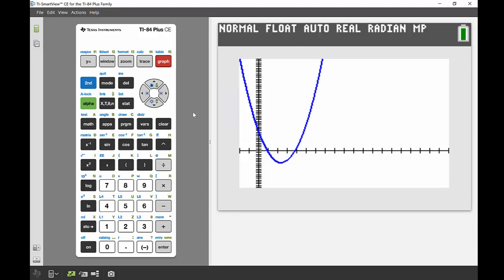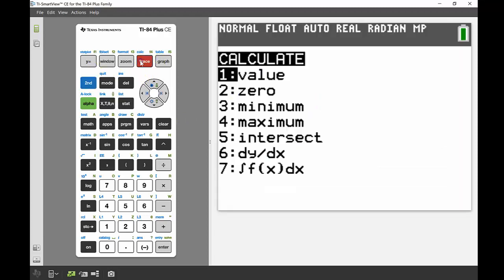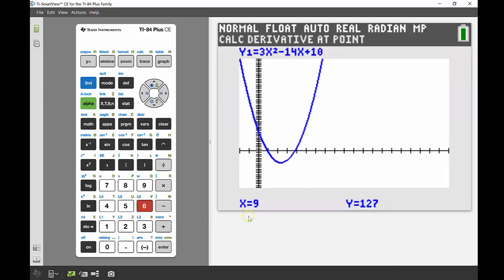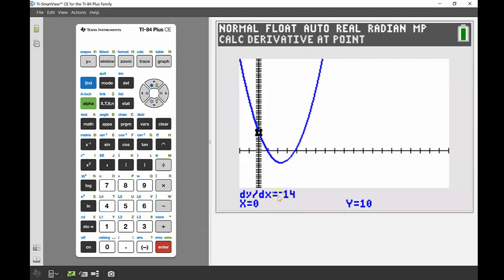To find my derivative at a point on the graph, I'm going to use my calc menu. Second and trace to bring that up, and then number six says dy on dx. It comes up and says x equals 9. I'm not finding 9, I'm finding where x is equal to 0. So if I just type in 0, that will change that and I can press enter. There we can see your derivative, that's at negative 14. Not to be confused with your y coordinate of 10. So derivative of negative 14 at x equals 0, and my y coordinate is 10.